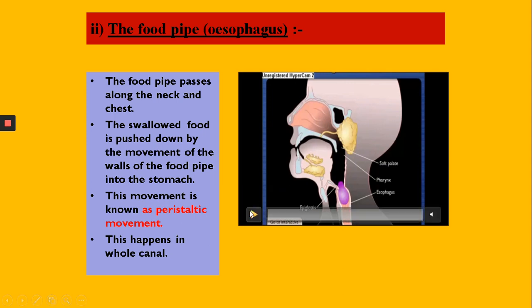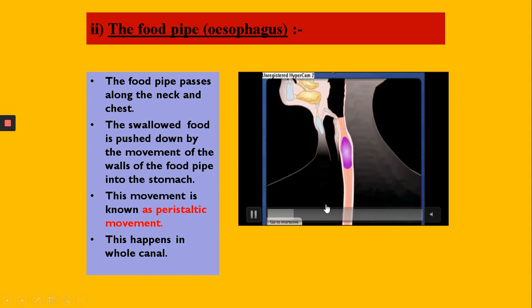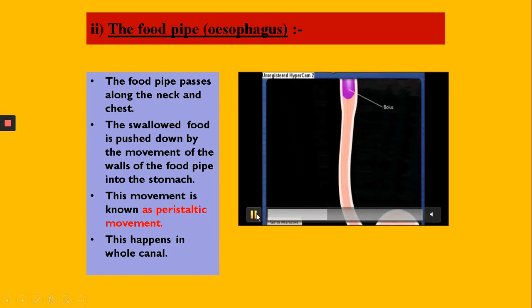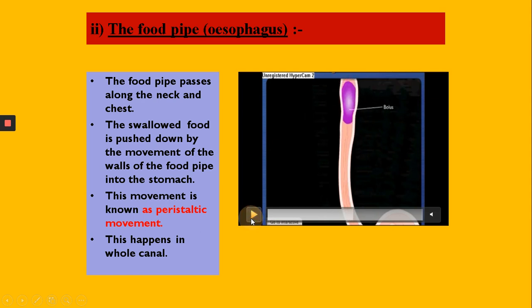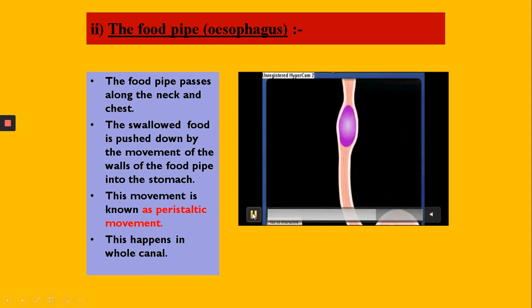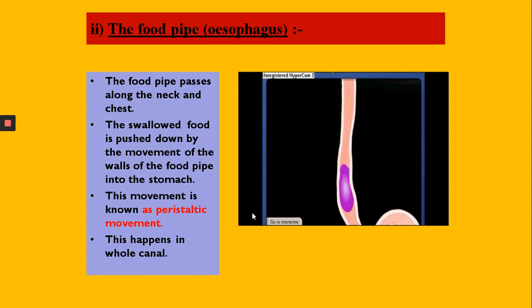You can see that the food is moving inside the canal. Notice that the front part is constricted and another part is relaxed — this is peristaltic movement: the contraction and relaxation of the walls. Where the wall constricts, the food is pushed forward; then the walls relax and take in more food. Through this cycle of contraction and relaxation, food is continuously pushed forward through the alimentary canal.